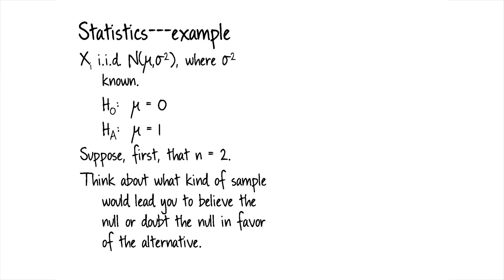But as I said before, this is a much easier case to analyze and for us to understand what's going on. So let's first think about the case where our sample size is small. We only have two observations. What kind of sample would lead you to believe the null or doubt the null in favor of the alternative?